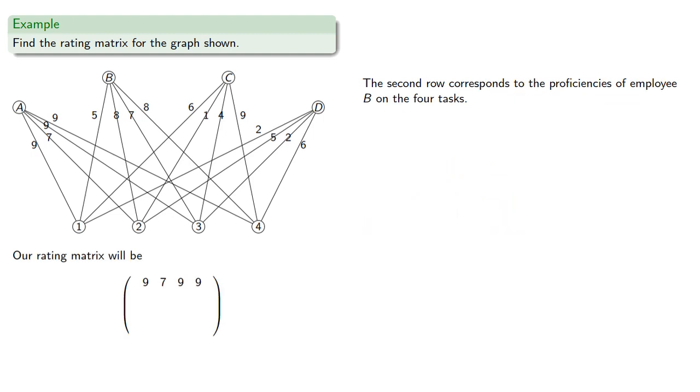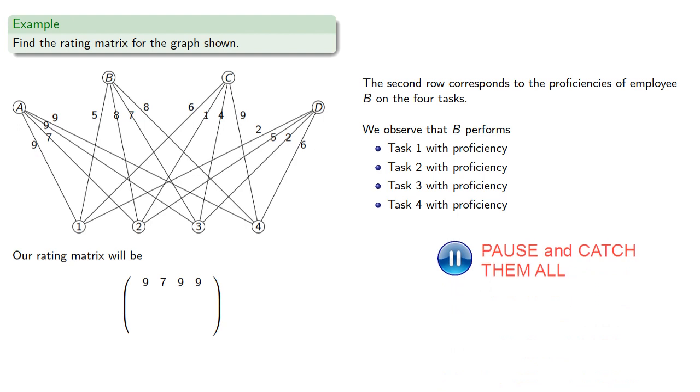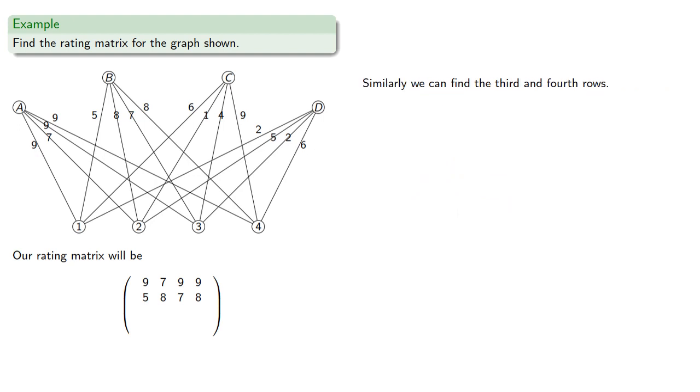The second row corresponds to the proficiencies of B on the four tasks, and we find, giving the second row of our rating matrix. Similarly, we can find the third and fourth rows.